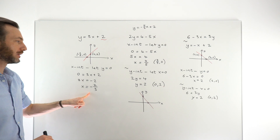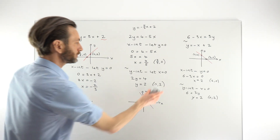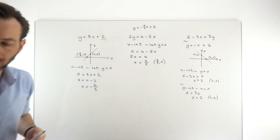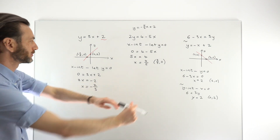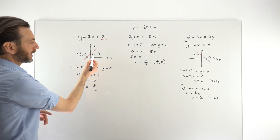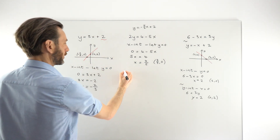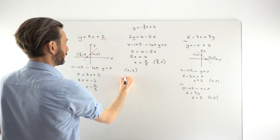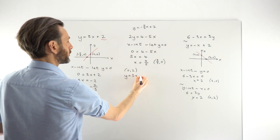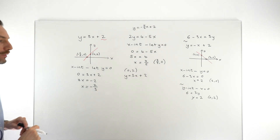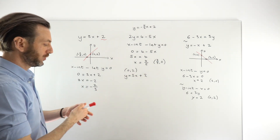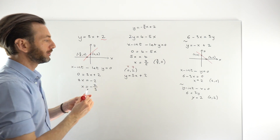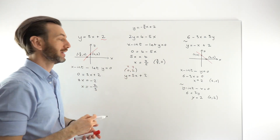Going back quickly to the first example, I want to consider an additional thing: points lying on a line versus points not on a line. Taking the point (0, 2), and restating the equation y equals 3x plus 2 — what does it mean to be a point that lies on a line? It means if you take the x and y coordinates of the point, those numbers should satisfy the equation.